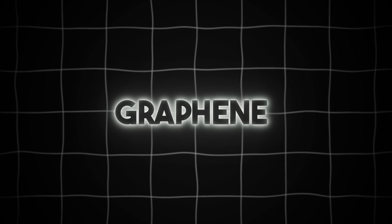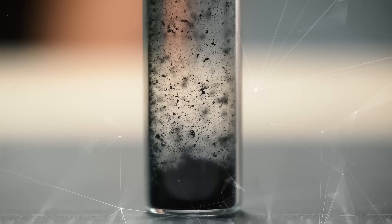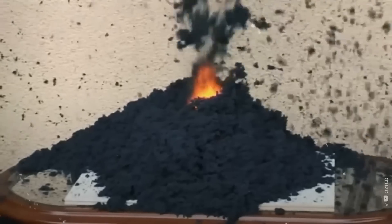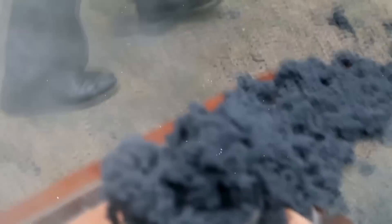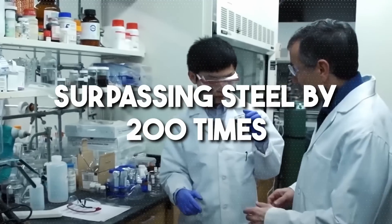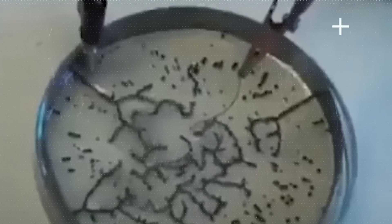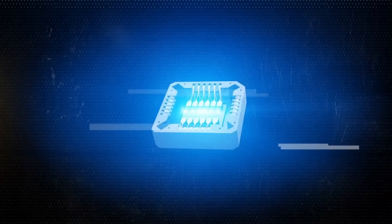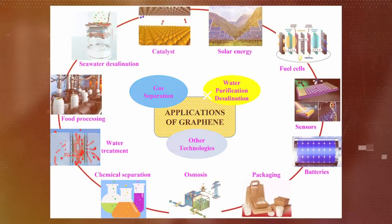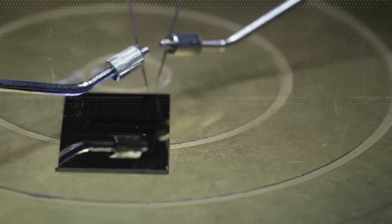Number 8, Graphene. Graphene, a remarkable hexagonal lattice of carbon atoms arranged in a single atomic layer, epitomizes the pinnacle of material science with its extraordinary properties. Despite being incredibly thin, graphene exhibits unparalleled strength, surpassing steel by 200 times, while also boasting exceptional thermal and electrical conductivity. Its ability to absorb light in unique ways further underscores its versatility and potential applications across various industries, earning it the moniker Wonder Material.